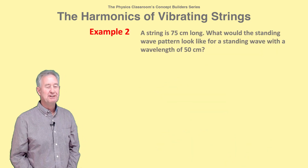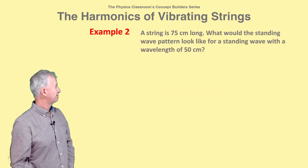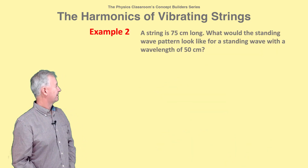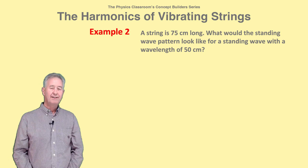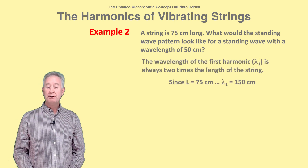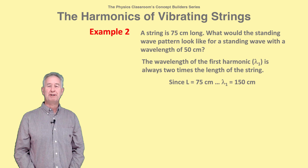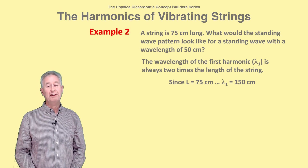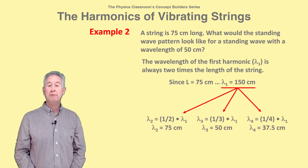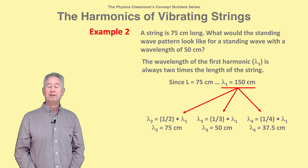Here is our second example. The first harmonic of this string would have a wavelength of 150 centimeters — always twice the length of the string. The wavelengths of other harmonics would be fractions of 150 centimeters,